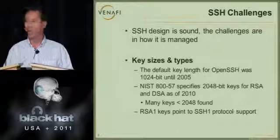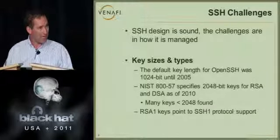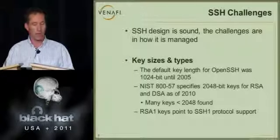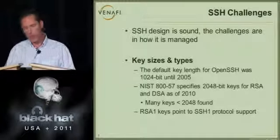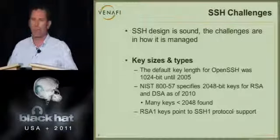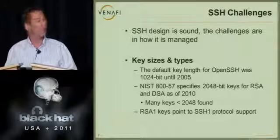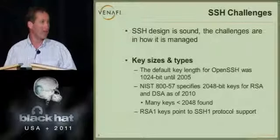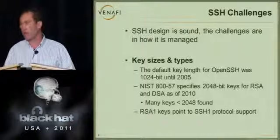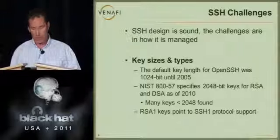If a system has a 1024-bit key, it means it's probably about five years old, maybe older. And it means that user keys for authentication were probably also generated with the same default key size — 1024-bit keys. That could be a problem, because if I've got 1024-bit keys being used for authentication, I have concern about brute force attacks against those keys for access. RSA1 keys point to SSH1 — so when you see an RSA1 key, you want to look more carefully and find out if there's SSH1 there as well.